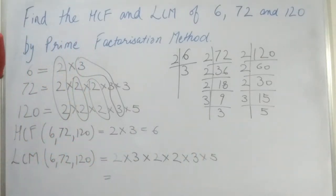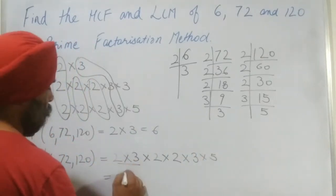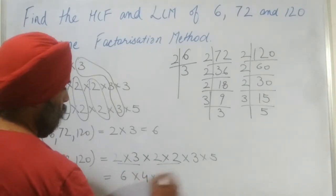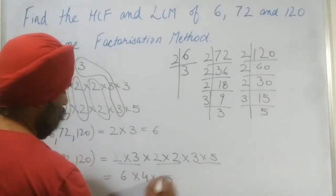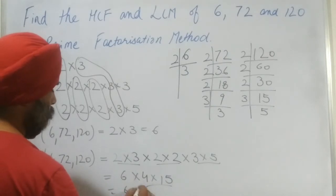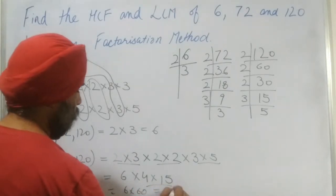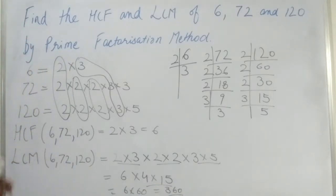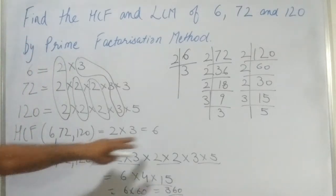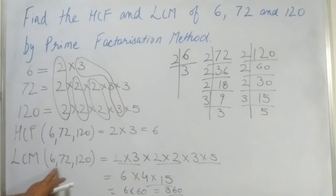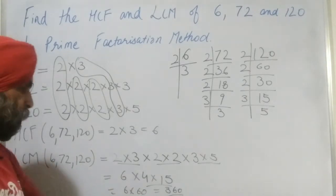Now we multiply: 2 × 3 = 6, then 2 × 2 = 4, then 3 × 5 = 15, giving 6 × 4 × 15 = 360. So the LCM of 6, 72, and 120 is 360.